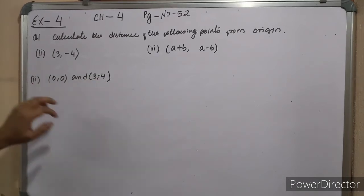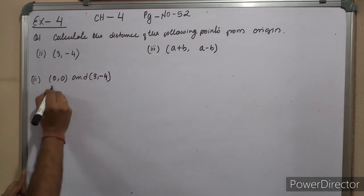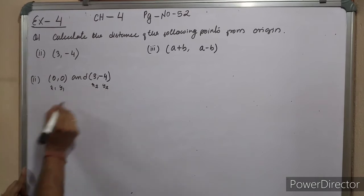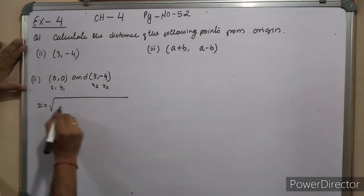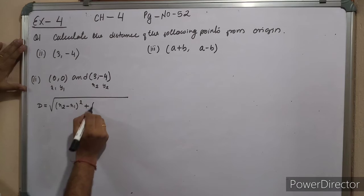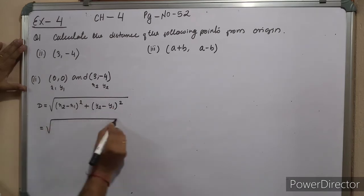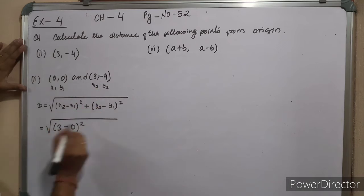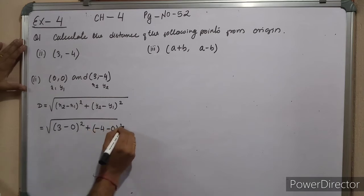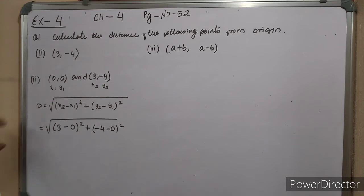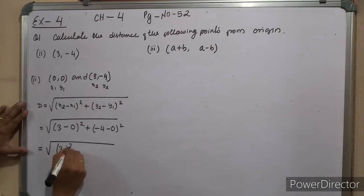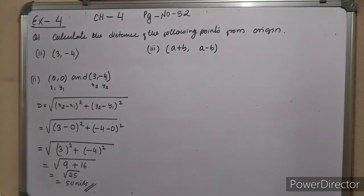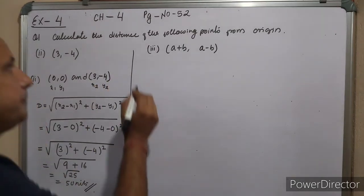Now (0, 0) and (3, -4). Same distance formula: x2 minus x1 whole square plus y2 minus y1 whole square. So 3 minus 0 whole square plus -4 minus 0 whole square. 3 squared is 9, and -4 squared is 16. 9 plus 16 is 25, square root of 25 is 5. The distance from the origin is 5 units.